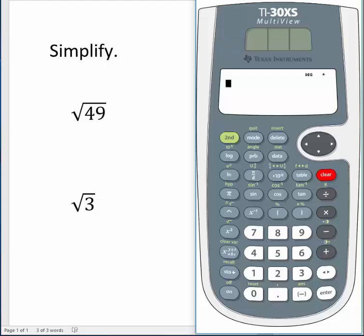Enter the square root of 3. Select the second key, then the X squared key, so that we can get our square root symbol on the screen. Type in 3, and then select Enter.